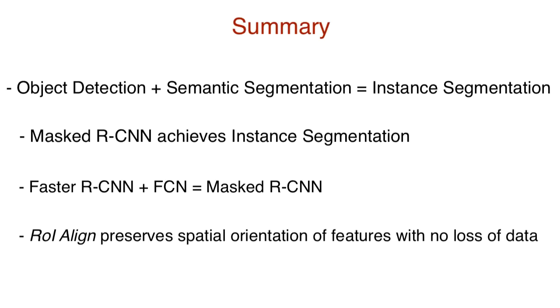Masked R-CNN uses ROI align, which preserves the spatial orientation of features and leads to no loss of information.